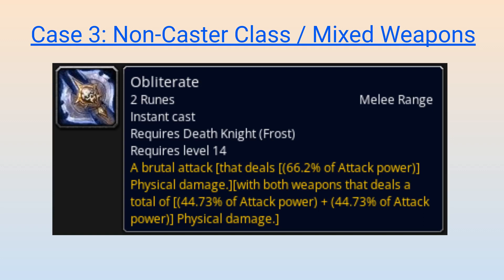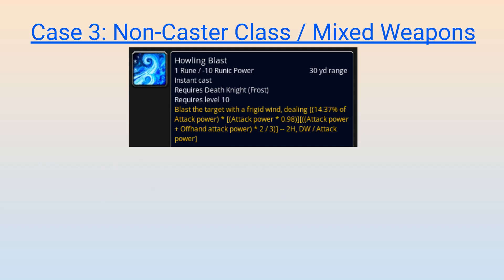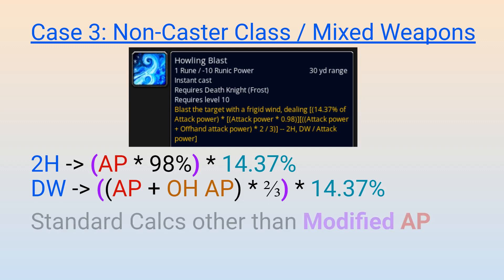However, specializations like Frost Death Knight have convoluted tooltips associated with many of their single-hit abilities, such as Howling Blast. In order to make sure these abilities do similar damage regardless of what weapon types you are using, Blizzard decided to specifically modify attack power calculations depending on your weapon type. So if you are using a two-hander, your standard attack power is multiplied by 98%. However, if you are dual wielding, your standard attack power and off-hand attack power are combined before this total is multiplied by two-thirds. In either case, the same ability coefficient of 14.37% is used for Howling Blast regardless of your weapon type — only the attack power calculation is different. And other than the modified attack power values, all other portions of the calculations are the same as we saw in the straightforward non-caster case.